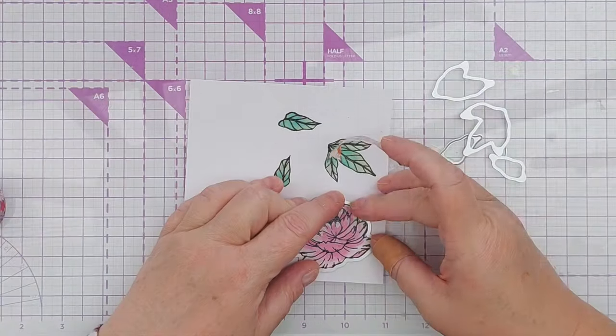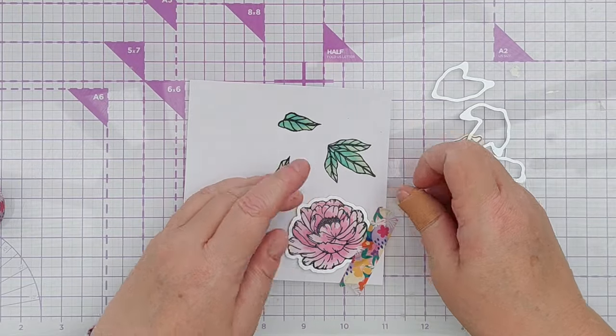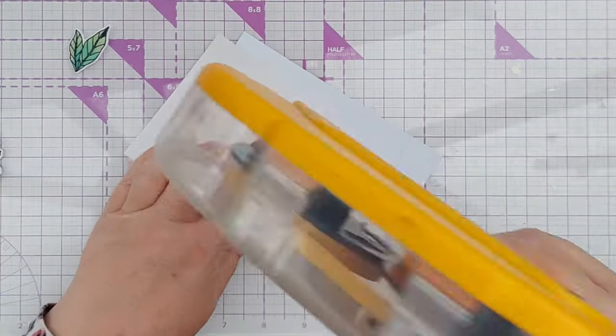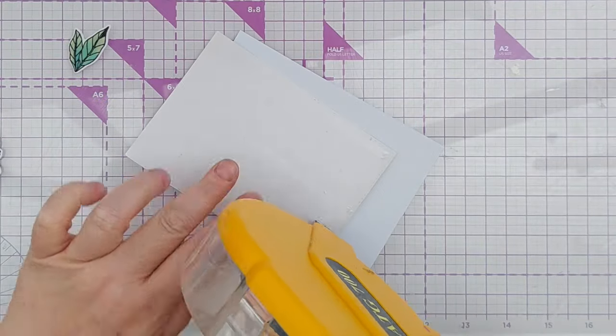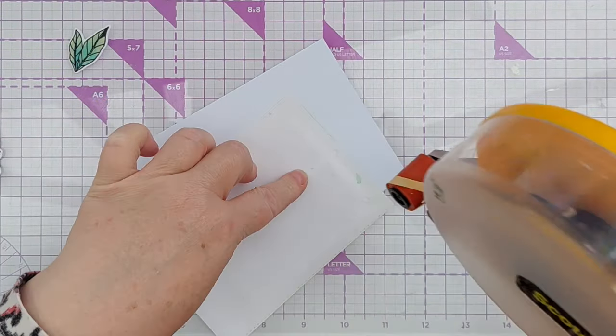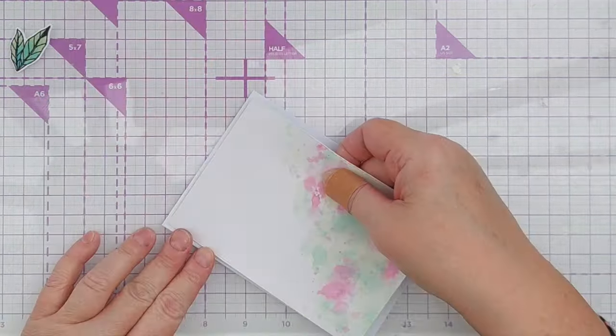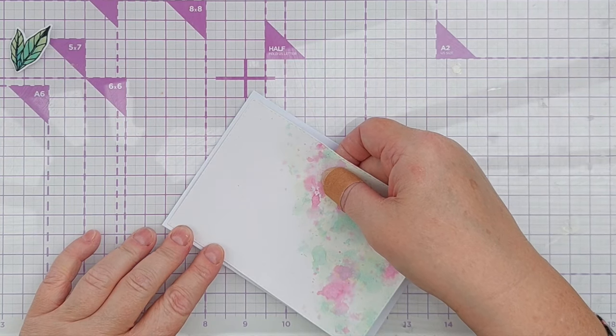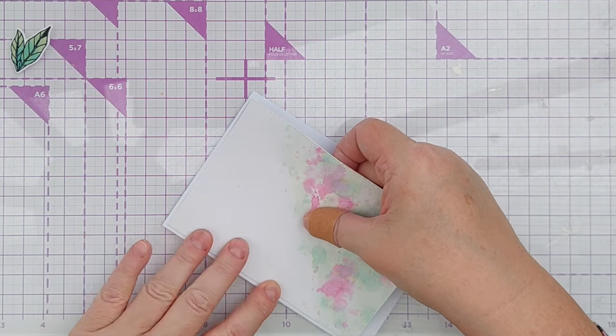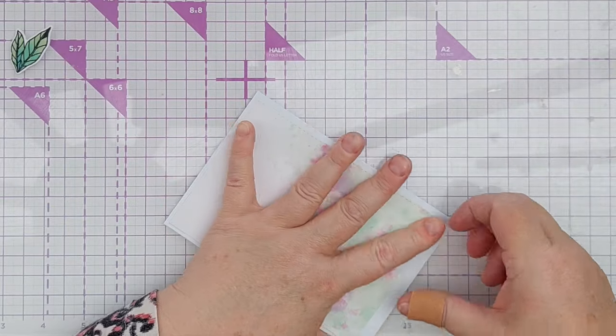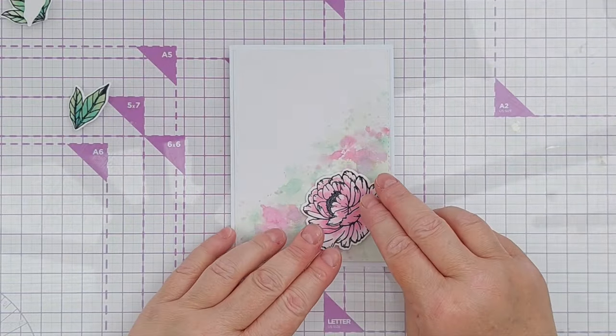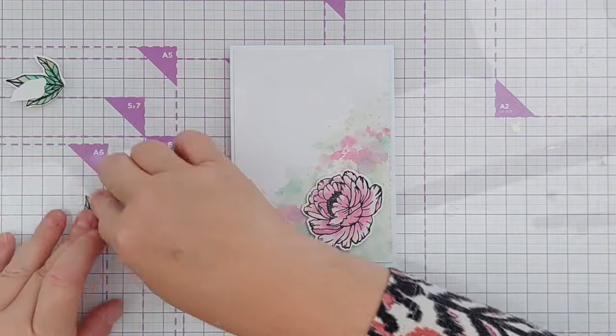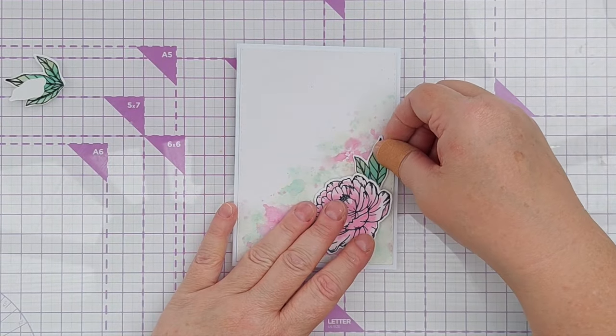Once that was all dry I die cut out all the shapes, and I used my tape runner to add my panel onto my card blank. In the photograph the flower is in the bottom right hand corner, kind of facing up towards the top left hand corner, so that's how I wanted to arrange my flower and leaves.